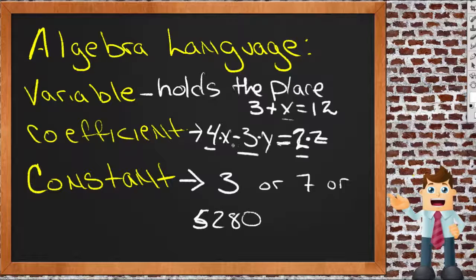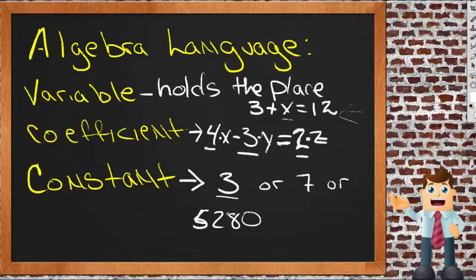These don't change. Whereas x may be 7 in one instance, or 10 in another, or 9 in one other instance, the numbers, the constants, don't actually change their values. They will always be what they are. 3 will never be anything other than 3. It won't sometimes decide to be 5.